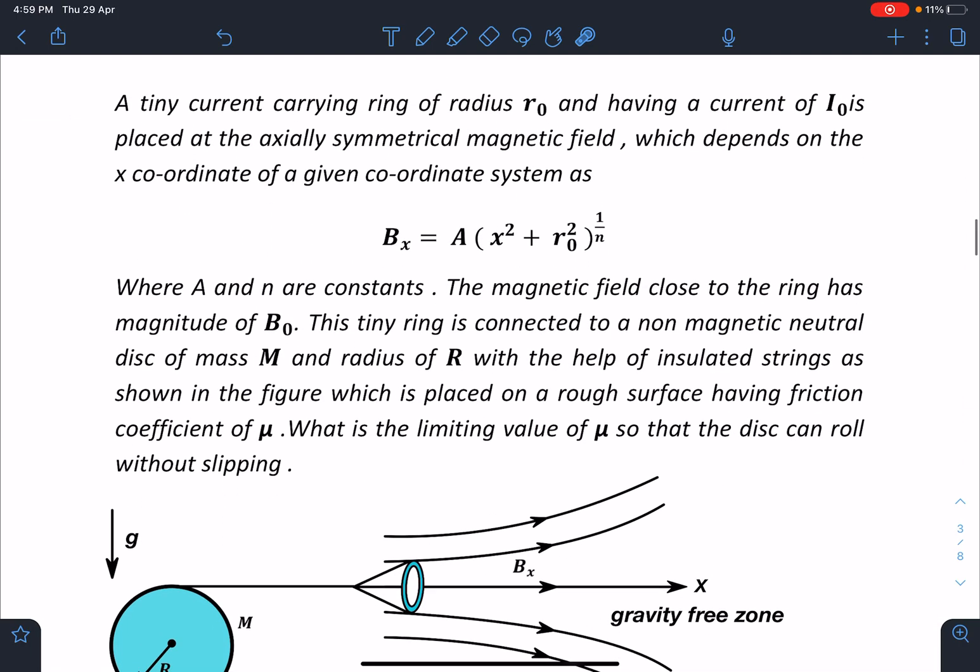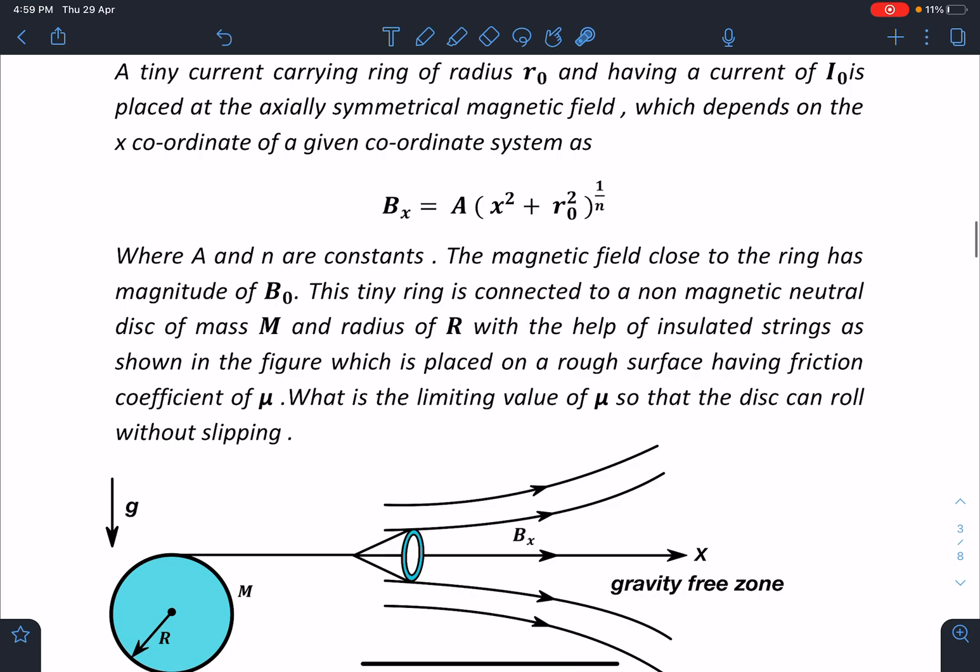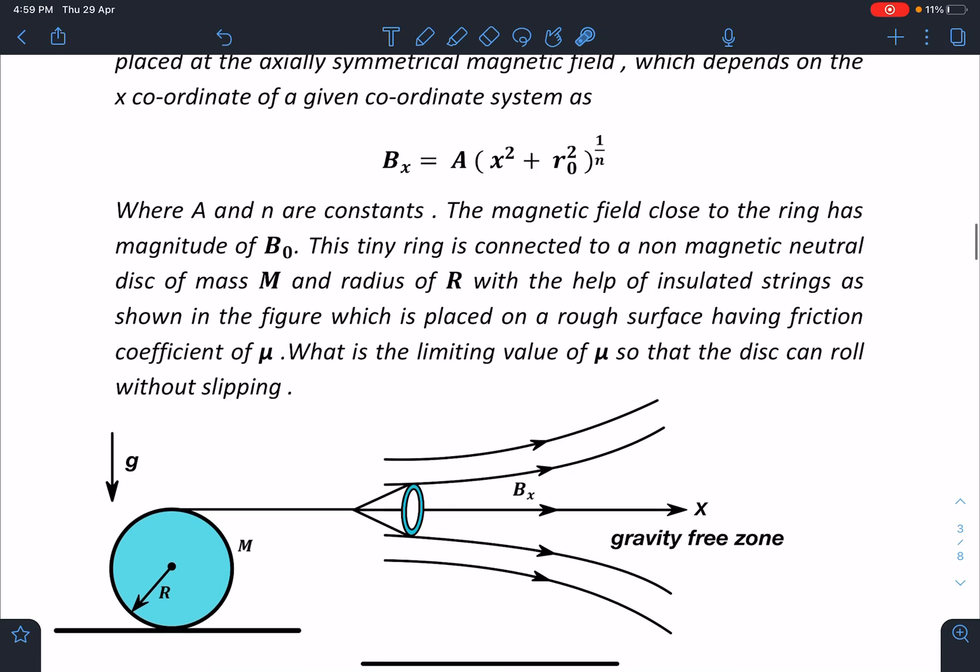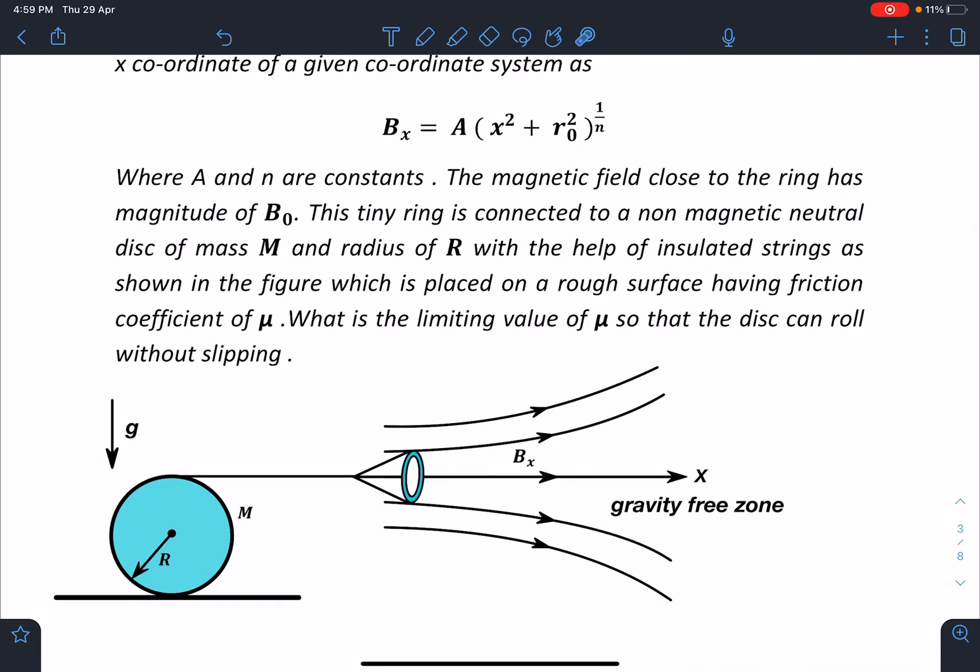So here is the problem statement: A tiny current carrying ring of radius r₀ and having a current of i₀ is placed at the axially symmetric magnetic field which depends on the x coordinate of a given coordinate system as Bₓ = A(x² + r²)^(1/n) where A and n are constants.